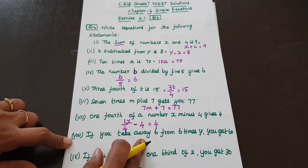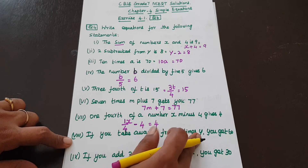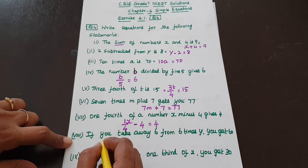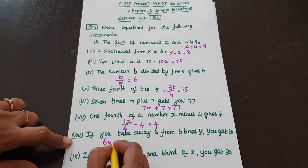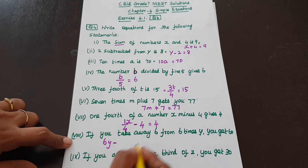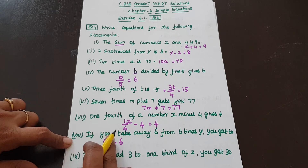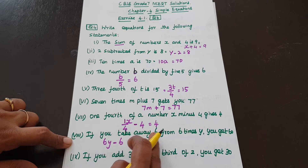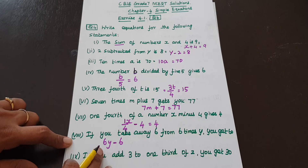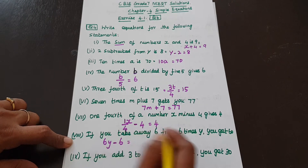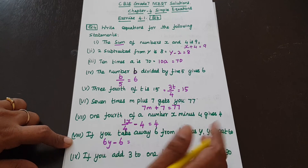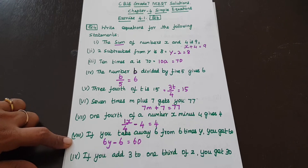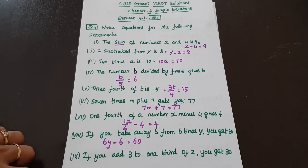Next: if you take away 6 from 6 times y, you get 60. 6 times y is 6y, and 'take away' means minus 6, so 6y minus 6 is equal to 60.